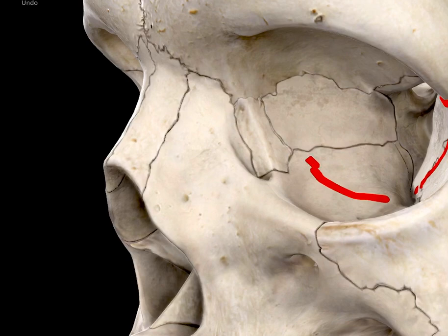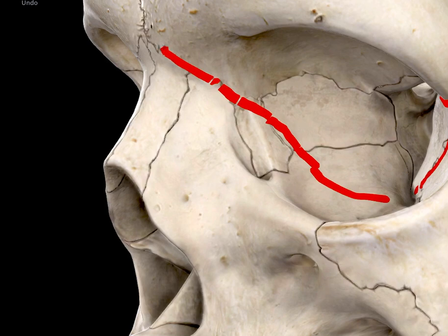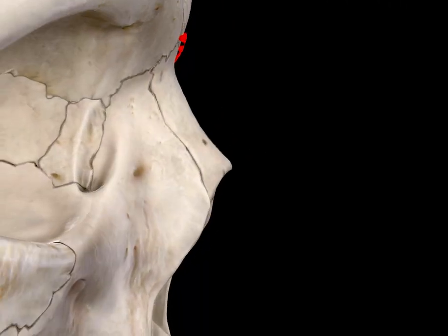On the medial surface of the orbit, the fracture line goes over the lacrimal bone, then the frontomaxillary suture. Likewise on the opposite side — from the frontomaxillary suture it goes on the medial wall of the orbit.